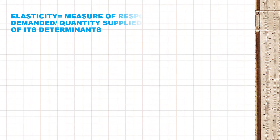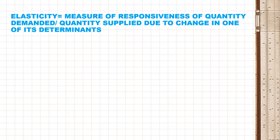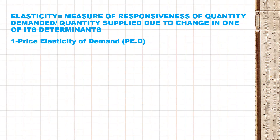Elasticity is defined as a measure of responsiveness of quantity demanded or quantity supplied due to changes in any of its determinants. In simpler words, you are analyzing to what extent consumers or suppliers respond to changes in their particular variables — how much you supply more, how much you supply less, or how much consumers buy more or less, depending upon the nature of commodity and the prices.